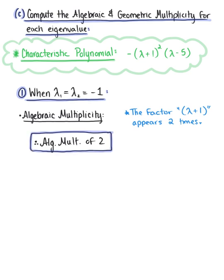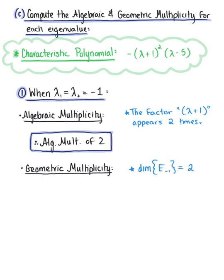For the geometric multiplicity, we think about the dimension of the corresponding eigenspace. We know that the eigenspace E sub -1 contains two vectors, so since the dimension of E sub -1 equals 2, we conclude that this eigenvalue has a geometric multiplicity of 2.